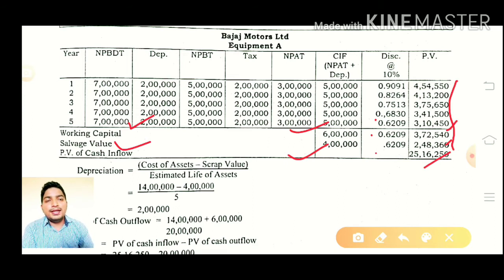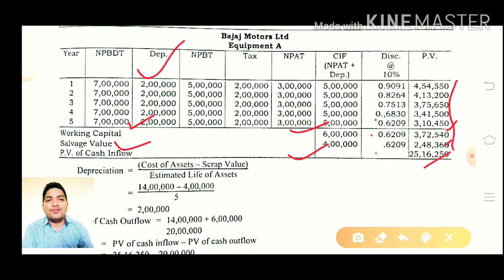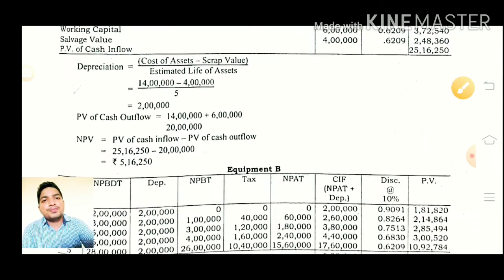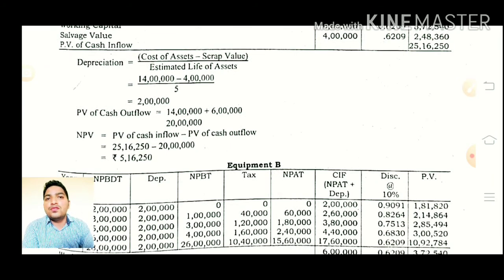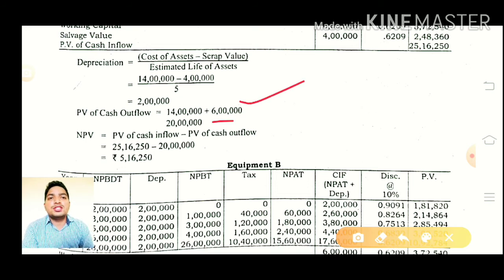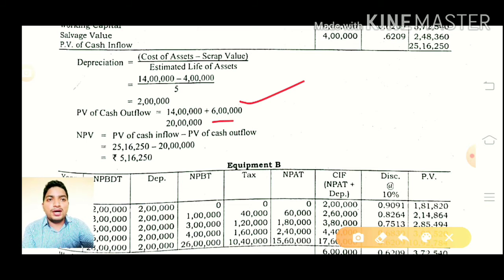The depreciation is 2 lakhs. How do you calculate depreciation? Depreciation equals cost of asset minus scrap value, upon life. Cost of asset is 14 lakh minus scrap value of 4 lakh, divided by life of 5 years — that gives 2 lakh depreciation. For PV cash outflow: cost of equipment 14 lakh plus working capital 6 lakh equals 20 lakh.